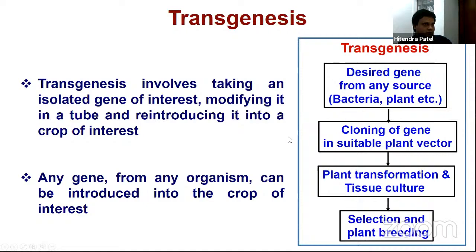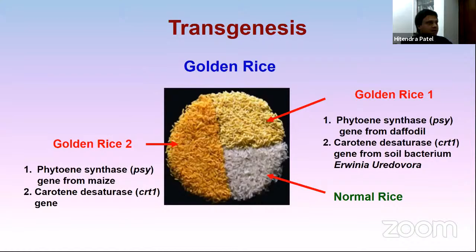The steps in transgenesis are: we isolate the desired gene from any source such as bacteria or plants, clone this gene into a suitable plant vector, transform it into a plant using tissue culture technique, and then select and do further breeding.